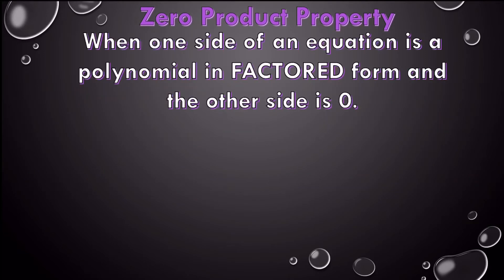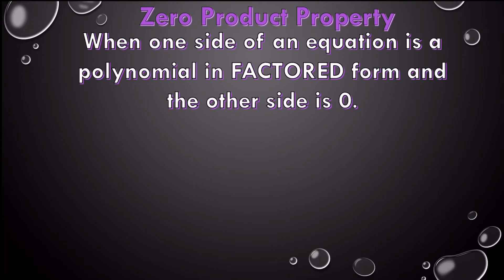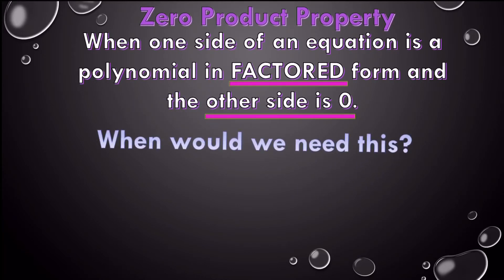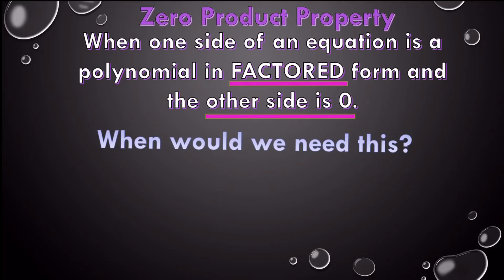And our property says when one side of an equation is a polynomial in factored form, this is when the property works and you can do it. If it's not in factored form, you can't do it yet. You have to get it there. And the other side is zero. The other side must be zero. Well, why would we need this? Who cares about this property? What difference does it make?